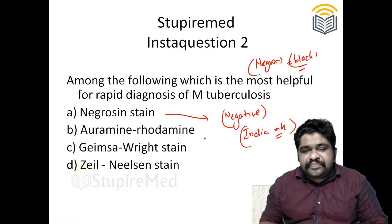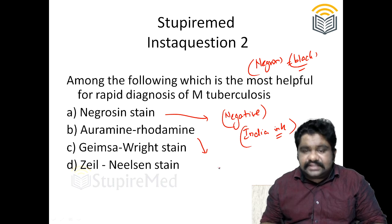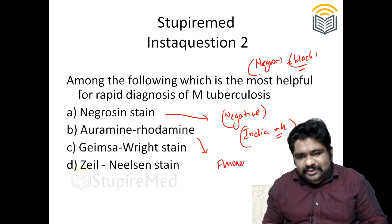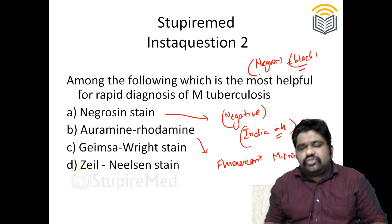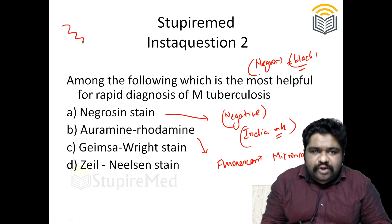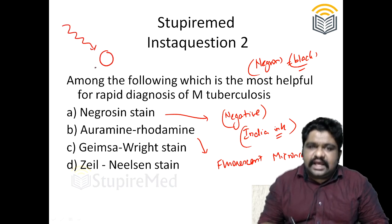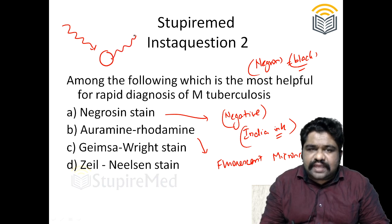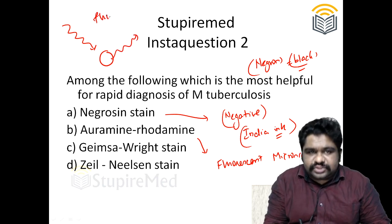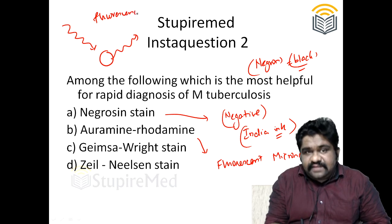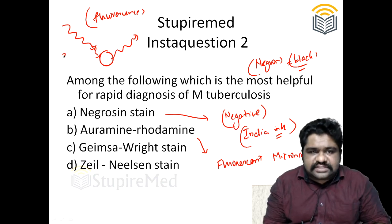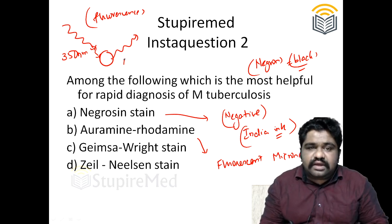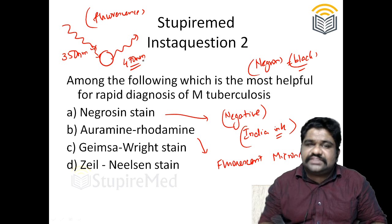What is auramine rhodamine stain? These are two important stains useful for fluorescent microscopy. Fluorescence means: if you throw light of a particular wavelength onto a substance and that substance gives out light of a different color, that is called fluorescence. For example, if 350 nanometers is the wavelength used and the substance emits a different color at around 470 nanometers, that is fluorescence.